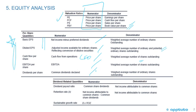Dividends per share is common dividends declared divided by the weighted average number of ordinary shares outstanding. The dividend payout ratio is common share dividends divided by net income attributable to common shareholders — remember to exclude the preferred dividend.